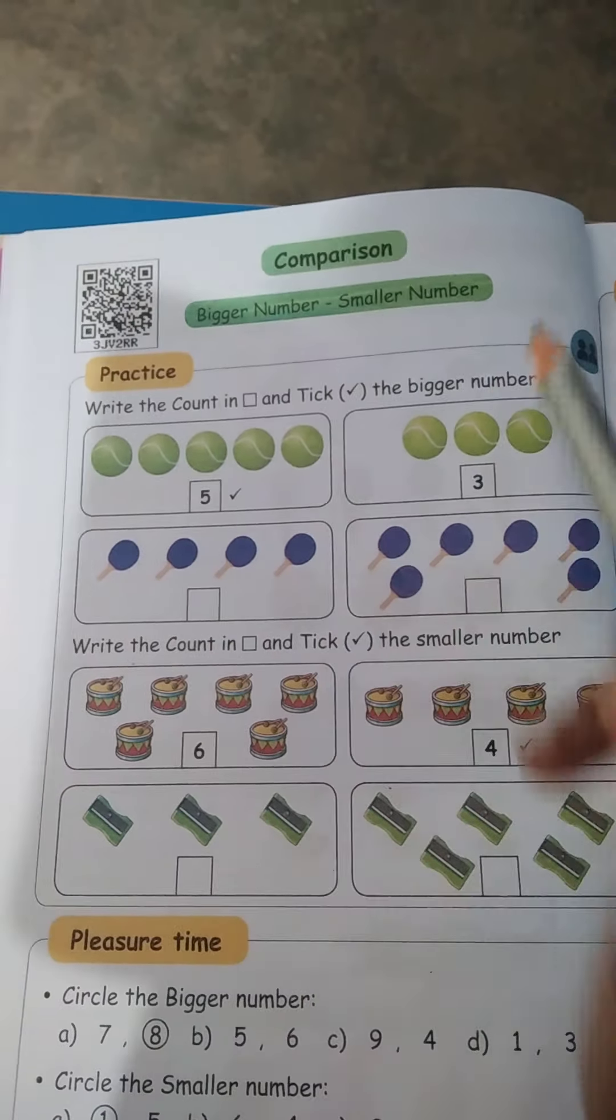First round laa vandhaa work pannu. Count: 1, 2, 3, 4, 5. Fill pannu. Next in the box count: 1, 2, 3. 3 pannu. Which is bigger number? 5 or 3? 1, 2, 3, 4, 5. 3 vandhu chinna dhe, 5 bigger number. Next.